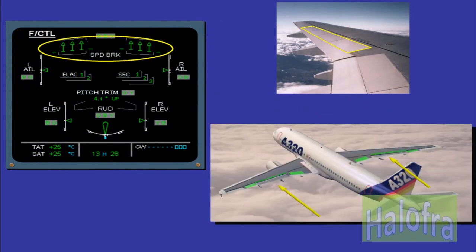The spoilers have several functions. Speed brakes use the three central surfaces. On the ECAM flight control page, the spoiler extended position is indicated by small arrows, as is the case for speed brakes. Speed brakes are used to decrease the aircraft's speed and to increase the rate of descent. Speed brake inhibition: the computers will automatically retract the speed brakes or keep them retracted when the aircraft is in a high angle of attack condition, flaps full configuration is selected, during landing, or in case of computer failure.